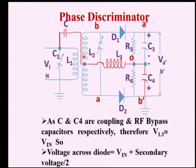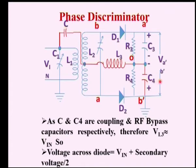Here we have only one tuned circuit — the primary and secondary are tuned to only one frequency, whereas in the previous case the secondaries were tuned to two different frequencies. The capacitors C and C4 are used as coupling and bypass capacitors. The voltage across the diode will be equal to V_in plus secondary voltage divided by 2.